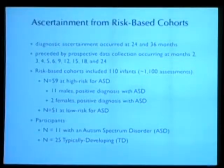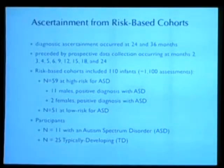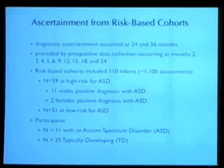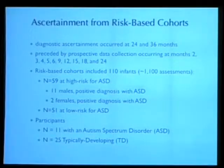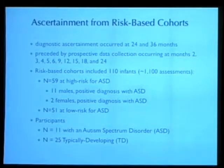This is the cohort that we've been studying, some time ago now. We're collecting data 10 times between the ages of 2 and 24 months — at 2, 3, 4, 5, 6, 9, 12, 15, 18, and 24 months. The ascertainment is done at 24 and 36 months. We have over 1,000 assessments.